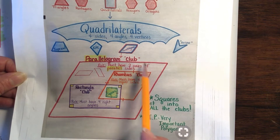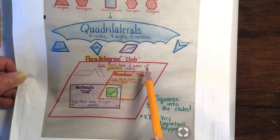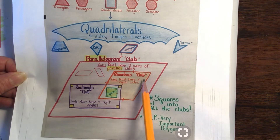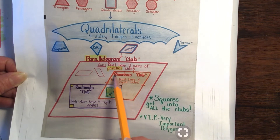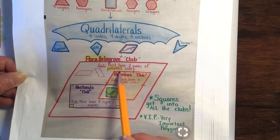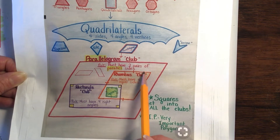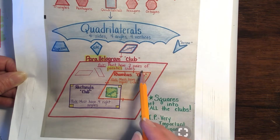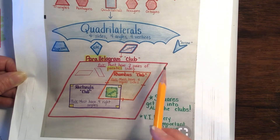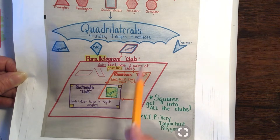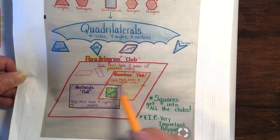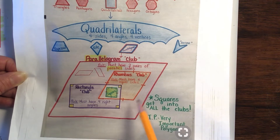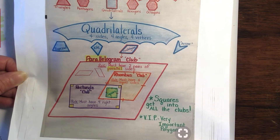In the parallelogram club, there are rhombuses. A rhombus is like a square that got sat on, and it does not have right angles. This is an obtuse angle — it's big. This is a cute little angle — it's little. So the rhombus does have four equal sides, but there aren't right angles. But it's in the parallelogram club because it has two pairs of sides that are parallel.